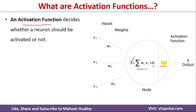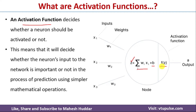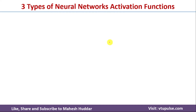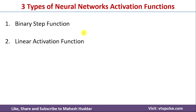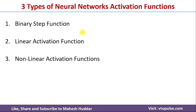If the activation function value is greater than some threshold value, the neuron is active; if not, it is not active. Basically, there are three types of activation functions in neural networks: the first is known as the binary step function, the second is the linear activation function, and the third is the non-linear activation function.